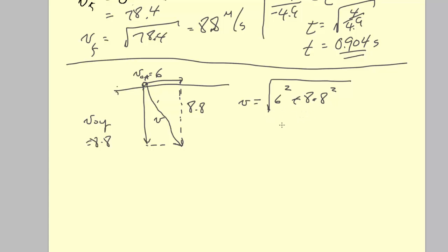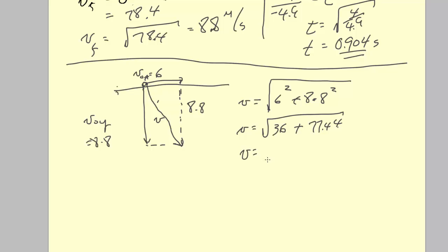As a note of mathematical interest: you cannot just throw those squared terms away — that does not give the correct answer. We have to do the math: 36 + 77.44 = 113.4. So V = √113.4 ≈ 10.7 m/s.